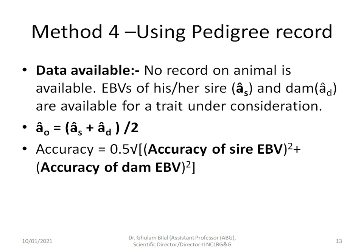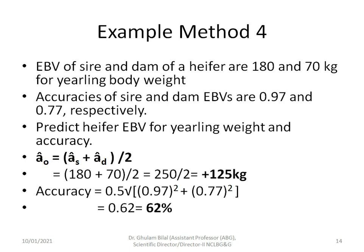Method 4 uses pedigree records when no performance record is available on the animal itself, but EBVs of the sire and dam are known. The breeding value of the offspring is: â_o = (â_sire + â_dam) / 2. Accuracy = ½ × √(r²_sire + r²_dam). Example: EBVs of sire and dam of a heifer are +180 and +170 kg for yearling body weight, with accuracies of 0.97 and 0.77. Her EBV = +175 kg and accuracy = 62%.